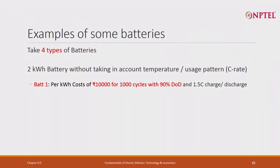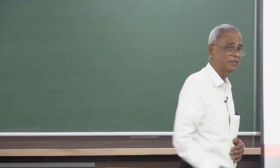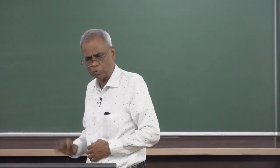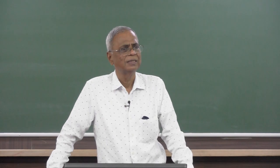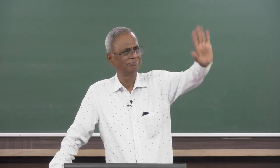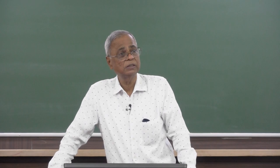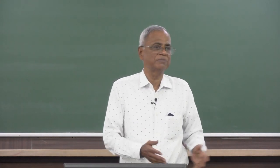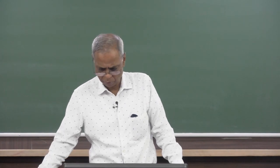Let us take battery one, which is a very low cost battery — this could be a very low cost NMC or could be LFP. It is a 2 kilowatt hour battery pack, with an effective cost per kilowatt hour assumed as low as 10,000 rupees. That is the pack cost — cells plus everything. It gives 1000 cycles with 90 percent DOD, and it can do 1.5 times charge C rate, though that is incidental and will not be used in the computation.